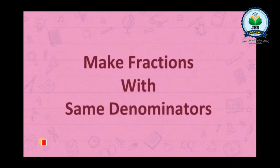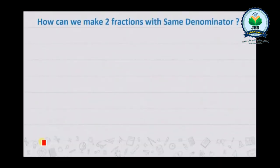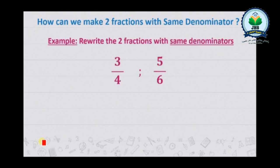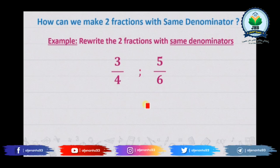Now we will begin with a new idea: making fractions with the same denominator. How can we make two fractions with the same denominator? To understand this idea, we will take an example. We need to rewrite the two fractions with the same denominator. Here we have three over four and here we have five over six.